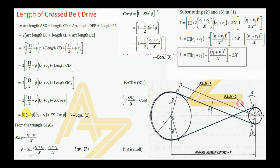Taking the 2 inside the first term gives π, and the second term becomes 2π(r1 + r2) + 2x·cos π. This is Equation 1. We need to express the belt length in terms of the radius of the driving pulley, the radius of the driven pulley, and the center distance between the two pulleys.